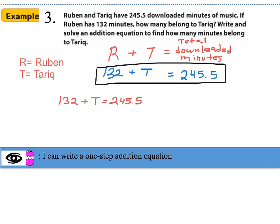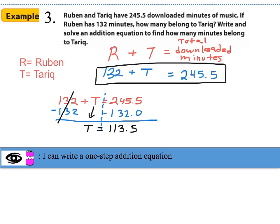Now that we've written the equation, let's solve for Tariq's minutes. Draw the fulcrum down the center of the equal sign and start on the side with the variable, which is the left-hand side. To isolate T, we get rid of the constant 132 by subtracting it on both sides — this is the subtraction property of equality. Crossing out 132 and dropping down T, we subtract 245.5 minus 132 to get 113.5. So 113.5 minutes belong to Tariq.